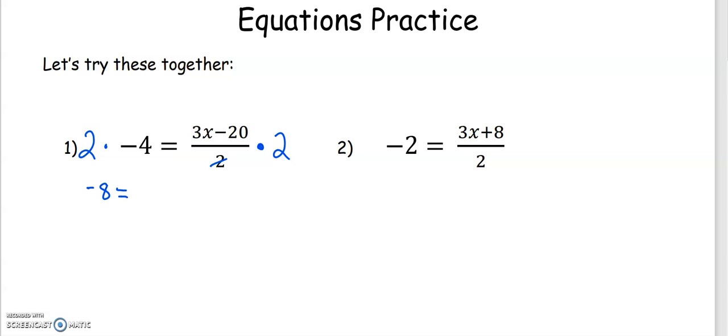This on the left side will give us negative 8, and on the right side our 2s cancel out and now we're left with just 3x minus 20. This is now just a two-step equation that we should be familiar with working on. We're going to add 20 to both sides, and then we have a one-step equation. Divide by 3.